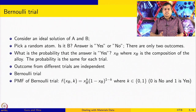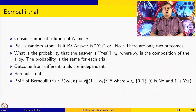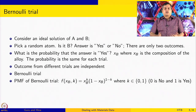If it is a B atom, the probability is XB and k is 1, so (1 minus XB) to the power (1 minus 1) equals 1, giving XB. If it is not a B atom, k is 0, so XB to the power 0 equals 1, and (1 minus XB) to the power 1 gives 1 minus XB — which is the probability of finding a non-B atom in an alloy of composition XB. So this is a Bernoulli trial.